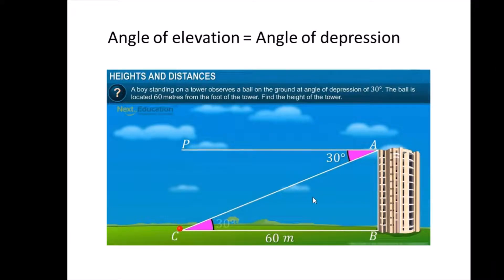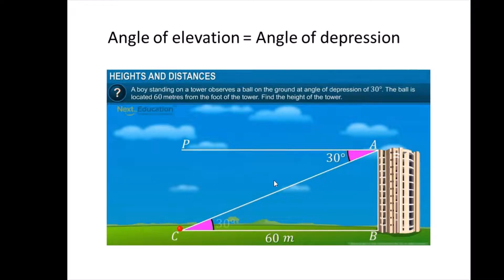The angle of elevation and the angle of depression are always equal. Why are they equal? Because the two horizontal lines are parallel to each other and the line of sight acts as a transversal. So the angle of elevation and the angle of depression are alternate angles to each other — that is why they are equal.